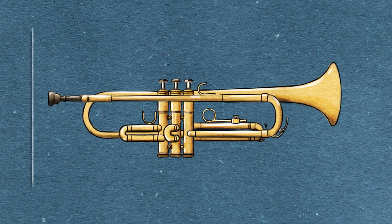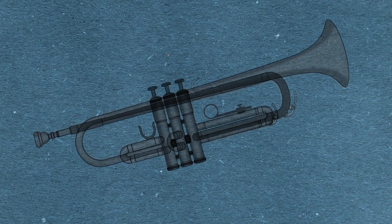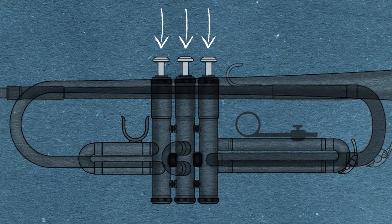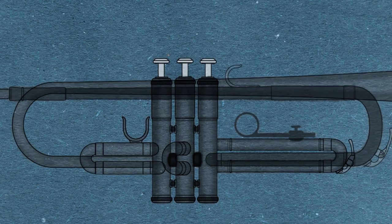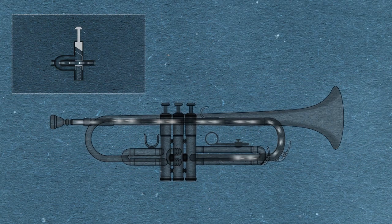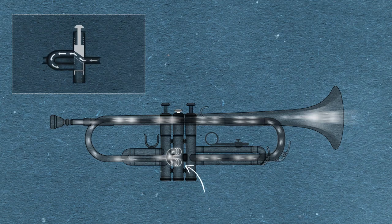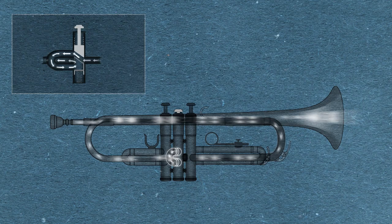The frequency or pitch of a note partly depends on the length of this tube. The length can be changed by pressing valves on the top of the instrument. The tube is shortest when no valves are pressed down. The tube is made longer when valves are pressed, and additional sections of tube are opened for air to enter.